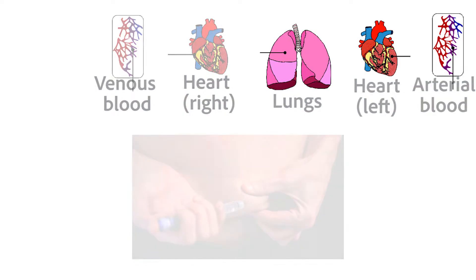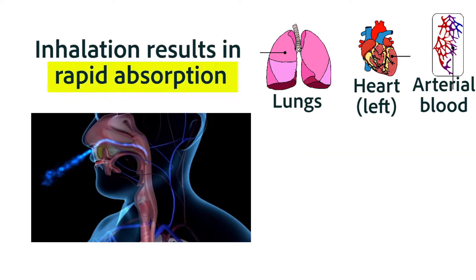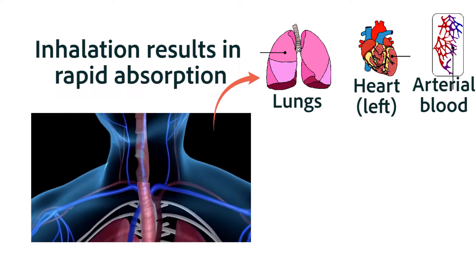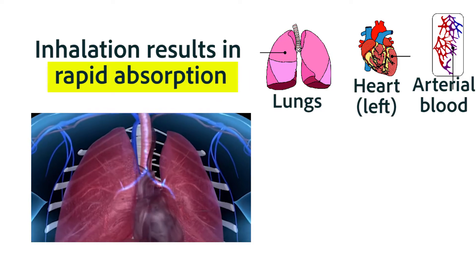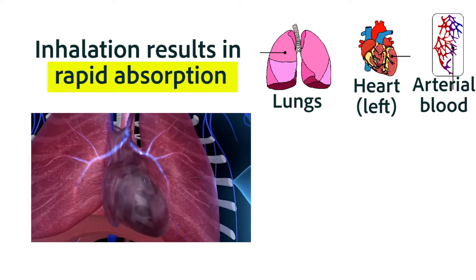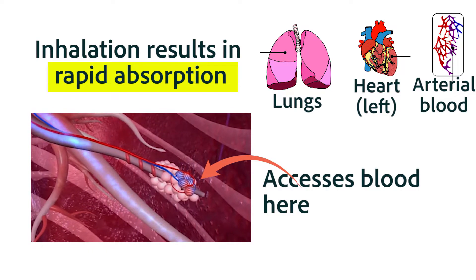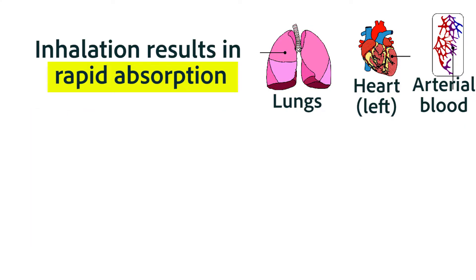Think about what happens when you administer an anesthetic into the lungs. The anesthetic would go directly down to the alveoli, where it would enter into the capillaries of the lungs. It would then just need to go to the left side of the heart and onto systemic arterial circulation. That is one of the fastest routes of administration.